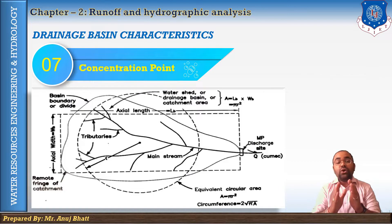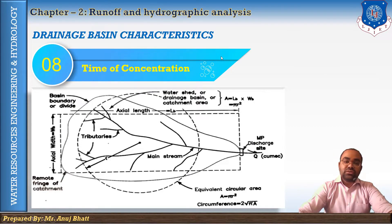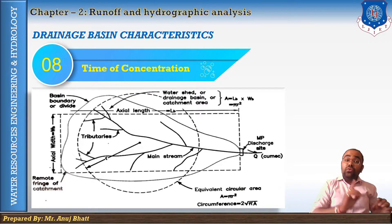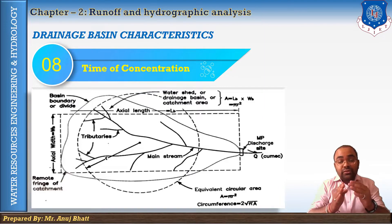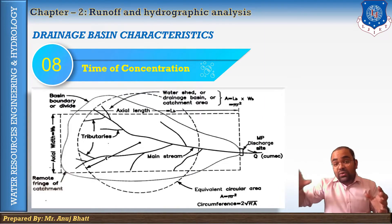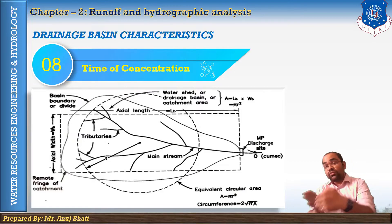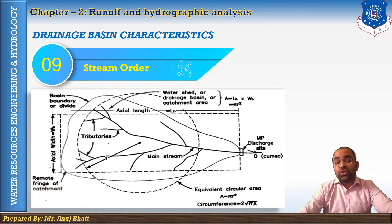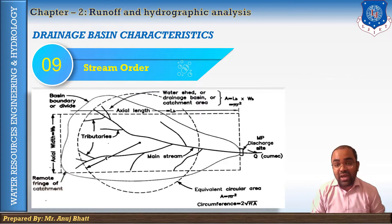The next is time of concentration — the time of concentration of a drainage basin is the time required by water to reach the outlet from the most remote point of the drainage area. That outlet is nothing but the concentration point where all branches come together and then move in a single lane.